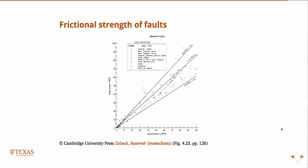Here's some data: if you plot for a bunch of different rocks the shear stress versus normal stress — this figure is in Zoback's book on page 126 — all of this data falls in here, and if you draw some lines you can see that all the data falls in a bound between a slope of 0.6 and 1. So this is essentially the coefficient of friction. The coefficient of friction for almost all rock types, based on a lot of data, is almost always in the range of 0.6 to 1.